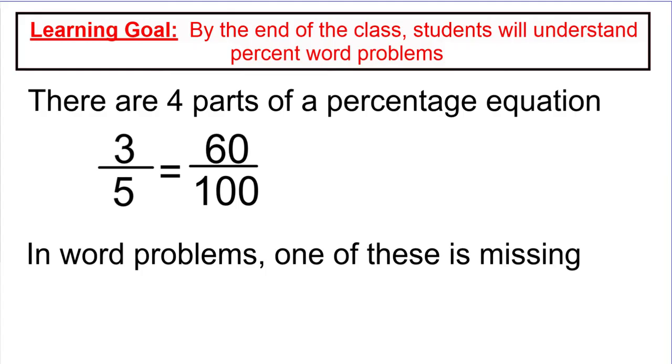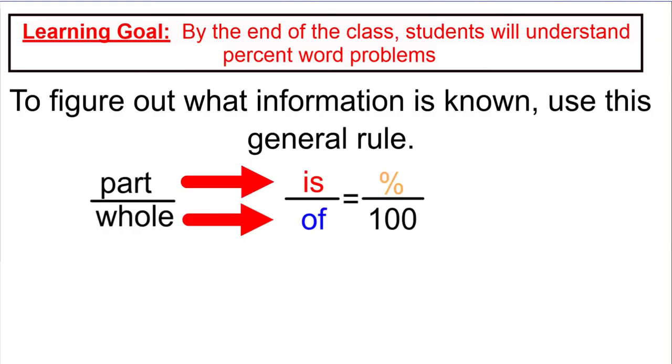And so your job is just going to be to set up this fraction correctly, set up the proportion correctly, and then solve that proportion to find whatever is missing. So to figure out what the information you know, here's the general rule: is over of equals percent over 100. This is a nice kind of trick that we can use to figure out what we know and what we don't know when we're trying to solve some percent problems.